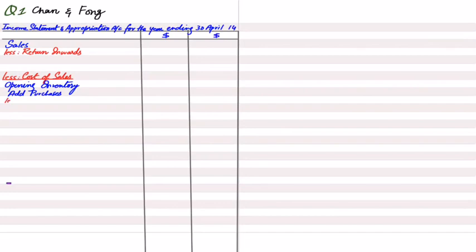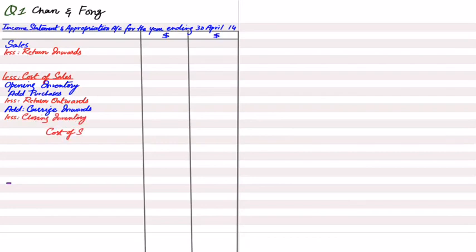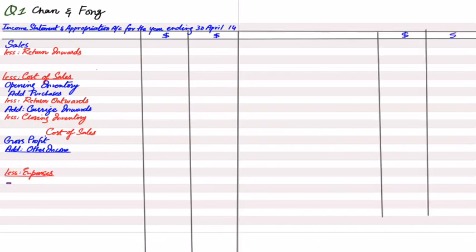The format starts with revenue or sales, then deduct return inwards to get net sales. Then comes cost of sales: opening inventory, add purchases, less return outwards, add carriage inwards, less closing inventory. Deducting cost of sales from net sales gives gross profit. Then we add other income and deduct expenses to arrive at profit for the year.